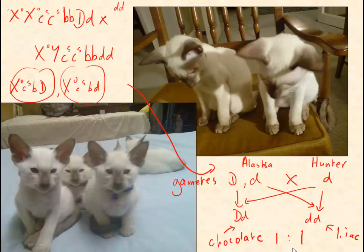A couple of questions arise from this. Number 1: what colour do these cats come out of the womb? Number 2: what actually happened was that we got 3 lilac points to 6 chocolate points. Is that far enough away from a 1 to 1 ratio to make you suspicious that something else is going on? That's a question to be answered by chi-squared.